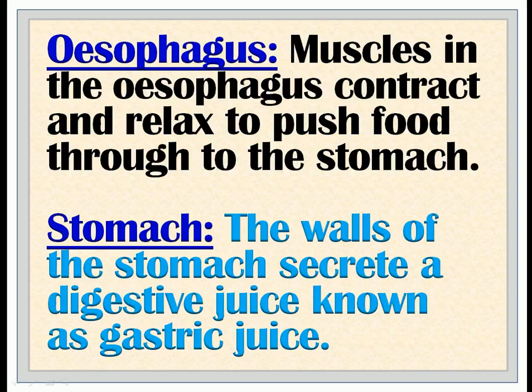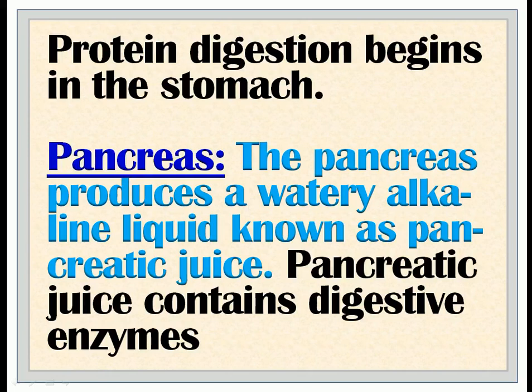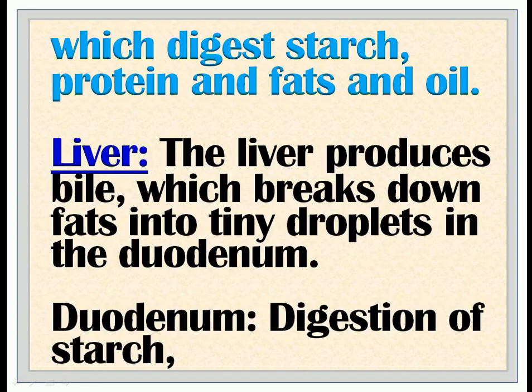Stomach: The walls of the stomach secrete a digestive juice known as gastric juice. Protein digestion begins in the stomach. Pancreas: The pancreas produces a watery alkaline liquid known as pancreatic juice. Pancreatic juice contains digestive enzymes which digest starch, protein, and fats and oils.